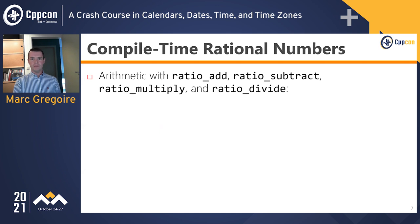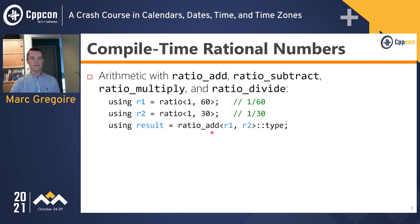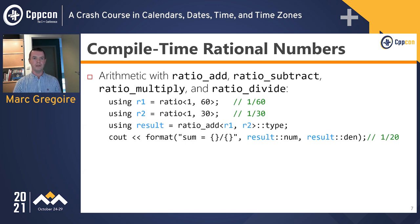It is possible to do arithmetic with these rational numbers, but since everything happens at compile time, you cannot use the standard arithmetic operators. Instead, you need to use special templates like ratio_add, ratio_subtract, ratio_multiply, and ratio_divide. Here I define two rational numbers: R1 represents 1 over 60 and R2 represents 1 over 30. Adding them together using ratio_add gives a result type, and outputting the numerator and denominator shows 1 over 20 — because compile-time ratio numbers always store their representation in normalized form.